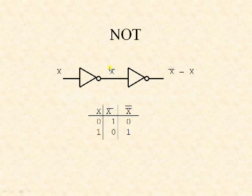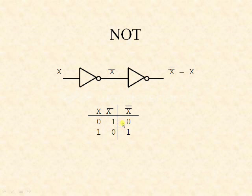This is how we represent the NOT symbol, that is x bar. Here we have taken one example with two NOT gates. The input to the first NOT gate is x and the output is x bar. This x bar is again given as input to another NOT gate, so ultimately we get the output as x bar whole bar. Since both bars get cancelled, the output becomes x. In the truth table: if x is 0, then x bar is 1 and x bar whole bar is 0; if x is 1, then x bar is 0 and x bar whole bar is 1.